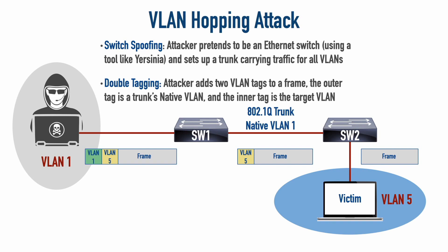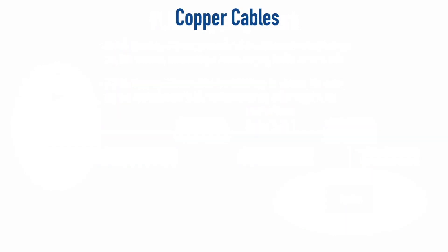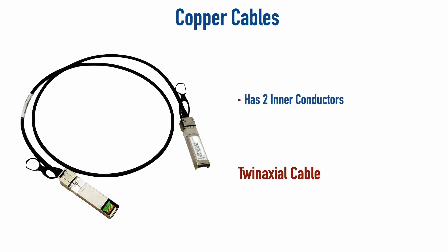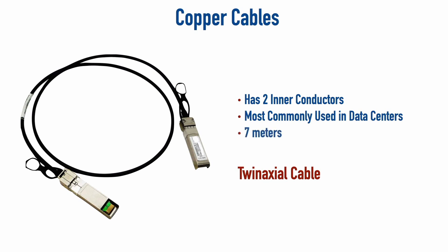Another new topic is a new type of copper cable called a twin-axial cable. It's called twin-axial because it has a couple of inner conductors. Typically it's used in data centers, where we run at very high speeds but won't go very far over copper — it has a distance limitation of about 7 meters. The speeds it supports include 40 Gbps and 100 Gbps, which are typical data center connection speeds.